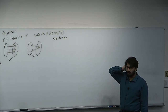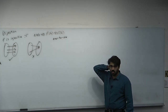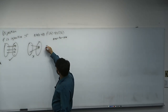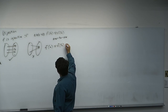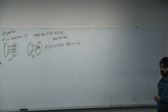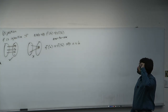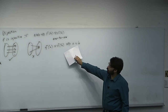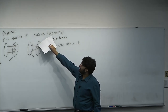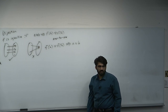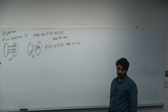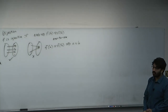A function is one-to-one if A does not equal B implies F of A does not equal F of B. What is the contrapositive of that statement? F of A equals F of B implies A equals B. You should know contrapositives, inverses, and converses for the exam. The reason we want the contrapositive is because it's easier to prove — assuming F of A equals F of B and then deducing A equals B is generally easier in practice.